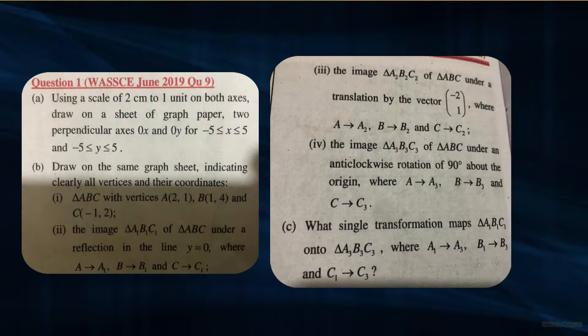What single transformation maps triangle A1B1C1 onto A3B3C3, where A maps onto A3, B maps onto B3, and C maps onto C3?